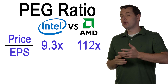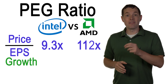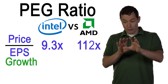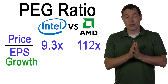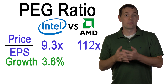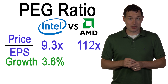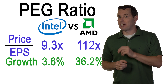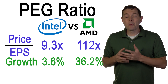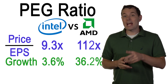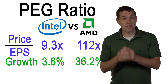But what if I told you that between now and 2024, the expected growth of Intel for their earnings per share is expected to be about 3.6 percent per year. Meanwhile, AMD is expected to grow at about 36 percent per year. Well, this is a completely different story. We should be willing to pay more for AMD since AMD is bringing a lot more growth to the table.